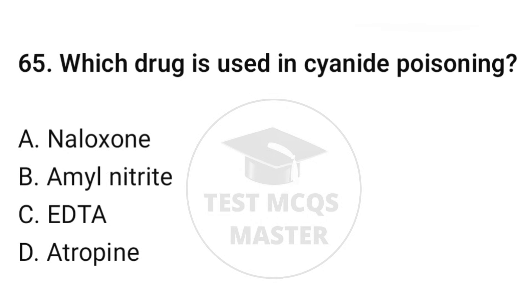Question number sixty-five: which drug is used in cyanide poisoning? The correct option is B: Amyl nitrite.